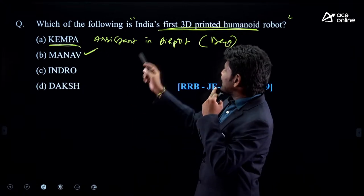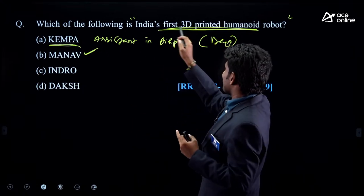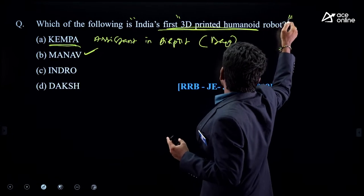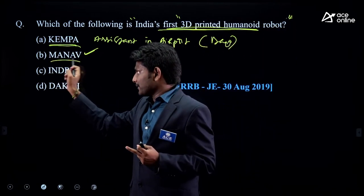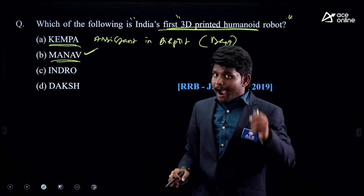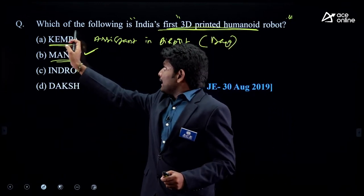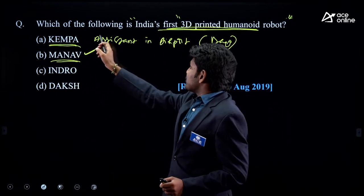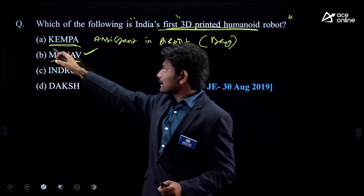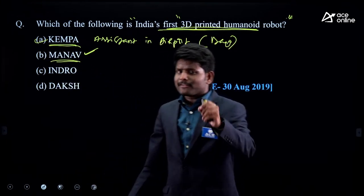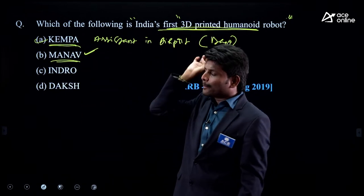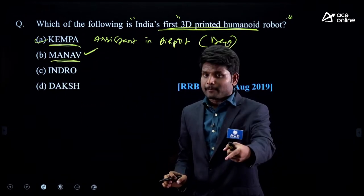Next year they may ask which robot is an assistant in an airport — then you should choose Kempa. If you just study that MANU is a 3D humanoid robot, it doesn't help you in next year's exam, because they've already asked this question and may not ask it again. Next year they may ask about Kempa, Indra, or Daksh.